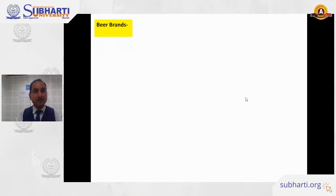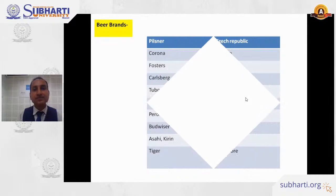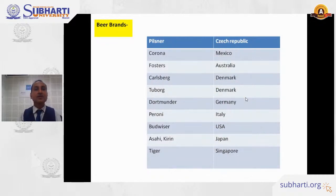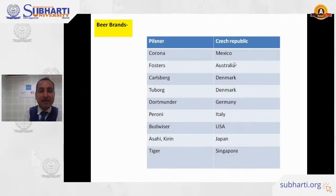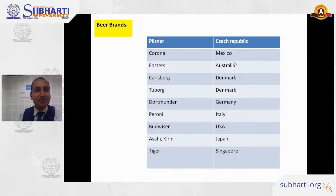Some world-famous beer brands by country: Corona from Mexico, Fosters from Australia, Carlsberg and Tuborg from Denmark, Dortmunder from Germany, Peroni from Italy, Budweiser from the USA, Asahi and Kirin from Japan, and Tiger from Singapore.